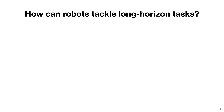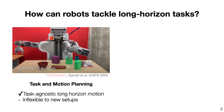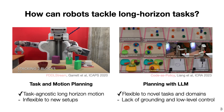So how do we teach real-world robots to perform long horizon tasks? We can use task and motion planning, which has shown effective results in generating task-agnostic long horizon motion. However, because it requires a predefined planning domain, it is often inflexible when applied to new real-world setups. In recent years, we have seen planning with large language models, which shows flexibility for novel tasks and scenes, but requires additional work on grounding and predefined low-level motion primitives.